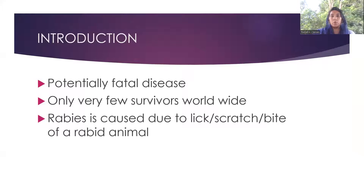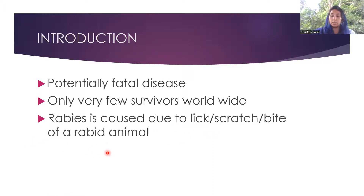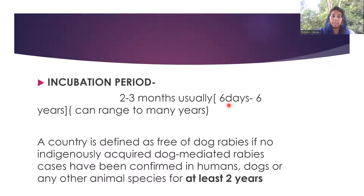Coming to the introduction — as you all know, rabies is a potentially fatal disease. Only very few survivors exist worldwide; the third report says around only 15 people have survived. Rabies is caused by the lick, scratch, or bite of a rabid animal. The incubation period is usually two to three months, ranging from as short as six days to as many as six to eight years. A country is defined as free of dog rabies when no indigenously acquired dog-mediated rabies cases have been confirmed in humans, dogs, or any other animals for at least two years.